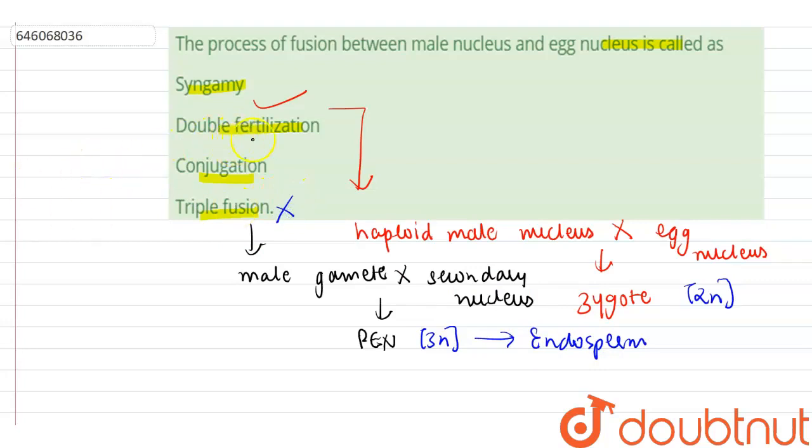So this option is incorrect. Now, double fertilization mainly takes place in angiosperms, where two sperm cells fuse with a single mega gametophyte. Basically, both syngamy and triple fusion, both of these events, take place in the process of double fertilization.